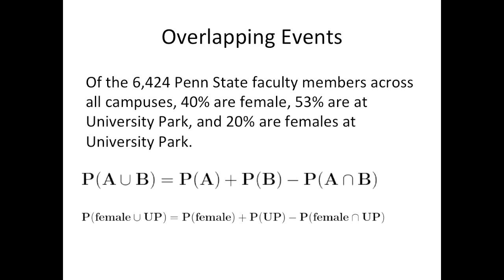The probability of being female or being at University Park equals the probability of being female plus the probability of being at University Park minus the probability of being female and at University Park. If we just added the proportion who are female plus the proportion who are at University Park, the females at University Park would end up getting counted twice. So we subtract this proportion so that these individuals are not double counted. Here, 0.40 plus 0.53 minus 0.20 equals 0.73, so 73% of Penn State faculty members are female or are at University Park.